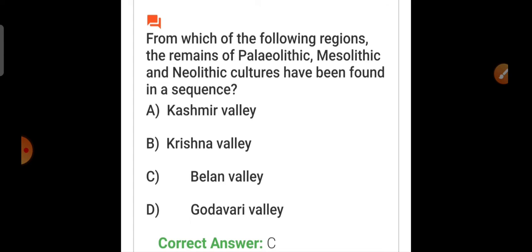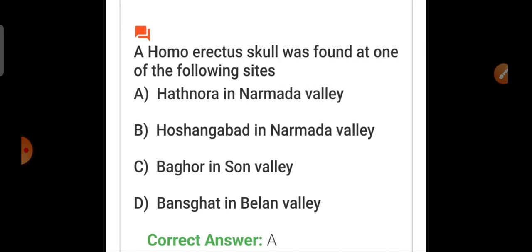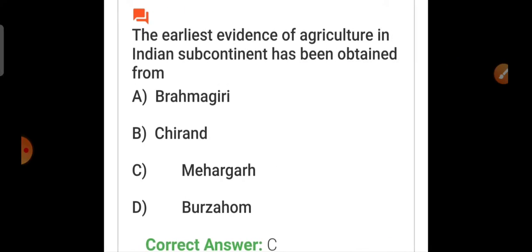Question number three: In which Indian state is Inamgao located? Correct answer is Maharashtra. Then, a Homo erectus skull was found at one of the following sites. Answer is Hathnora in Narmada Valley.